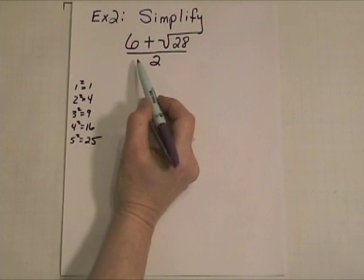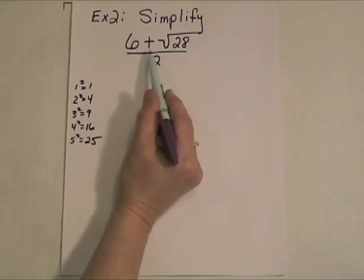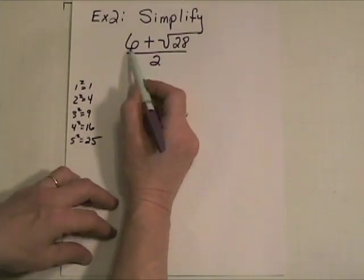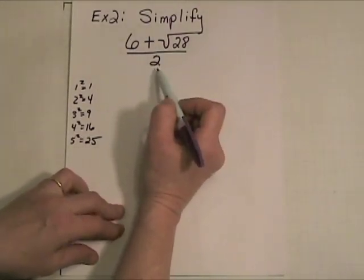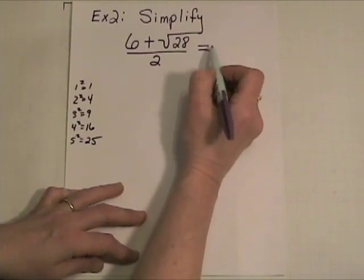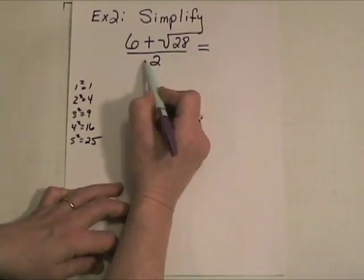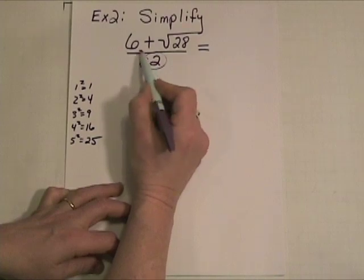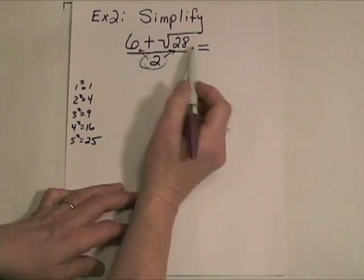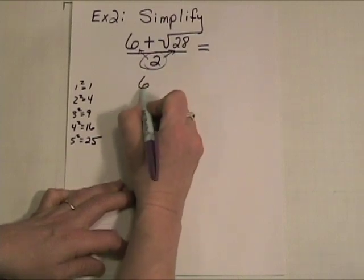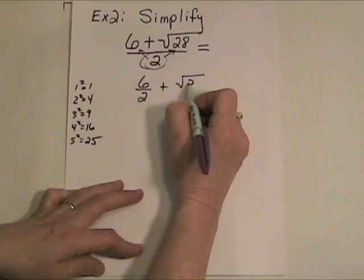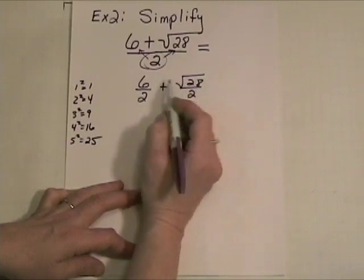Here is something that could very easily be a solution to a quadratic equation, where we have 6 plus a radical all over another number. Now, how do we simplify this? Well, we've got to remember here that this denominator is being divided into both parts of the numerator. So, this is going to be equivalent to 6 over 2 plus the square root of 28 over 2.